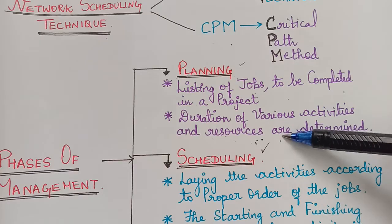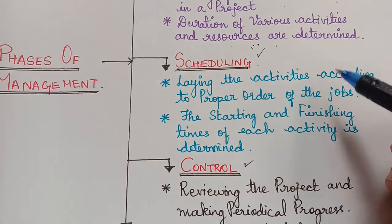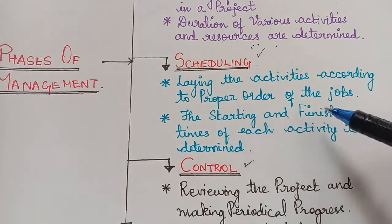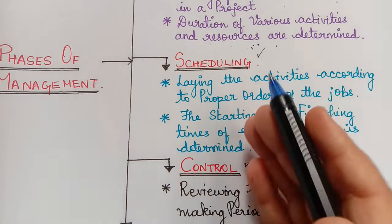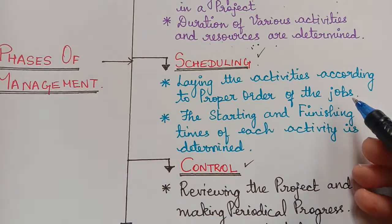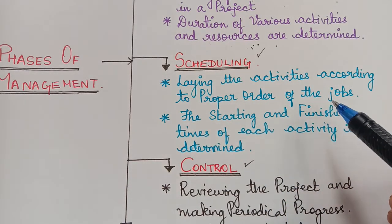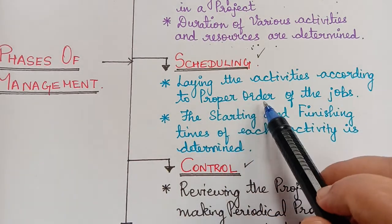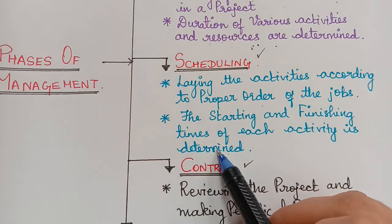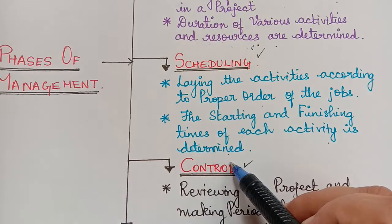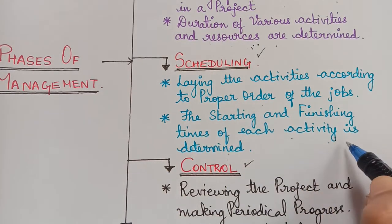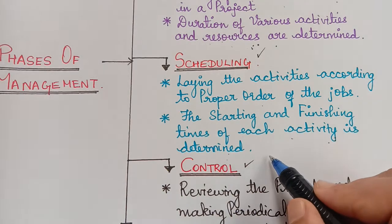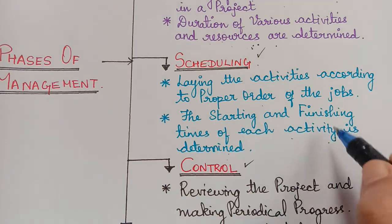The second phase is Scheduling, which involves laying out the activities in proper order — that is, in a logical sequence — determining after which job the next has to be carried out. For example, in the construction of a building, first we have to lay the basement, then proceed with other activities. Also, the starting and finishing times of each activity are determined under Scheduling.